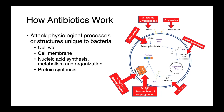Rifampin inhibits DNA-dependent RNA polymerase, preventing transcription. And finally, we have a large number of drug classes which interfere with bacterial protein synthesis. The tetracyclines, aminoglycosides, macrolides, chloramphenicol, and streptogramins all act on either the 30S or 50S ribosomal subunit.